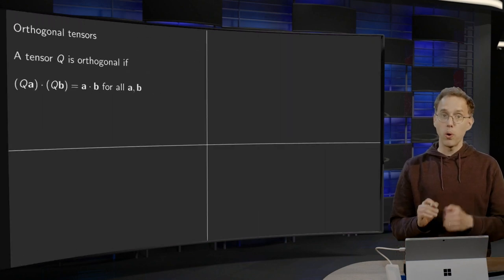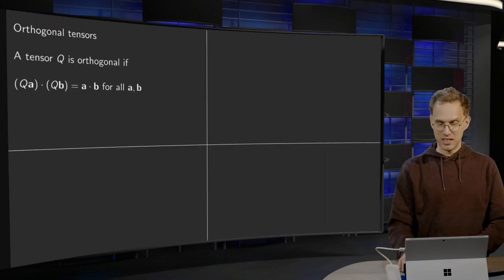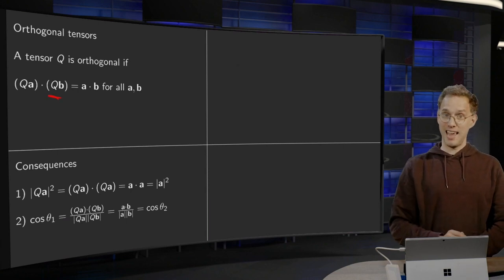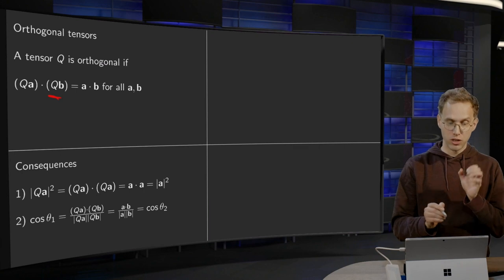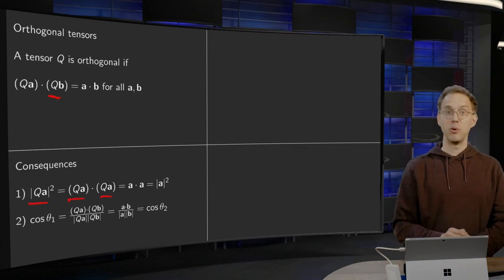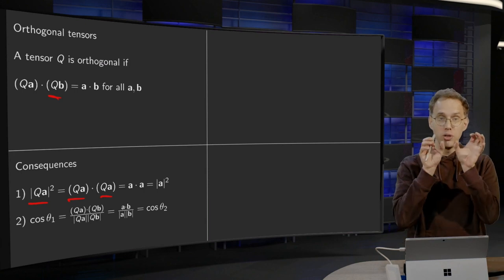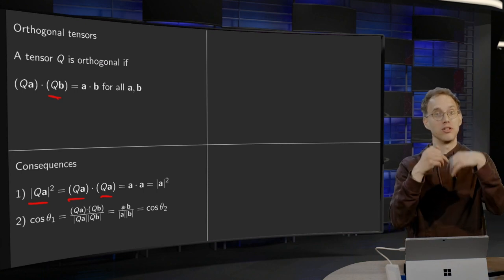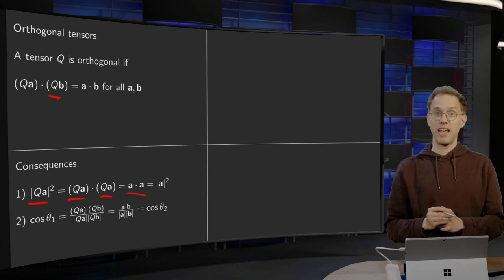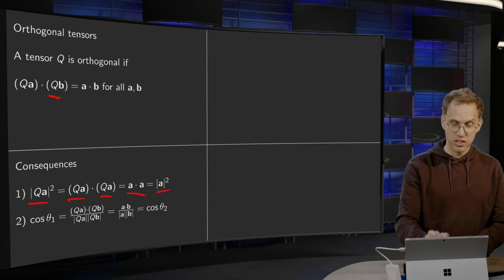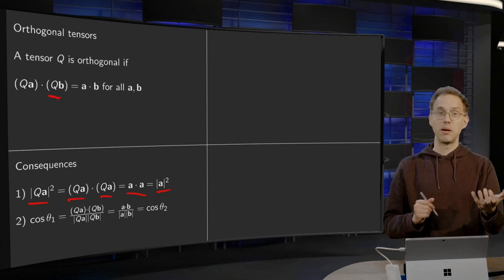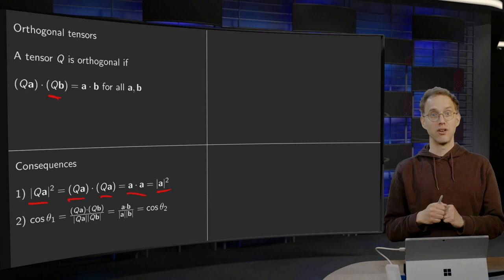What does this definition imply? First, you can put b equal to a. So you get (Qa)·(Qa), which is the length of Qa squared. Because Q is orthogonal, (Qa)·(Qa) has to equal a·a, which is the length of a squared. So indeed, the length of Qa equals the length of a.